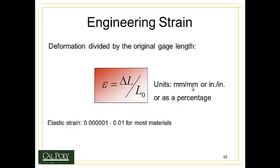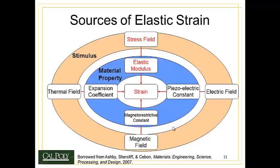For some reason that makes people nervous, so you'll often see the units displayed as millimeters per millimeter or inch per inch. Or, more commonly, you'll see it listed as a percentage. For example, if I had a sample that was 100 millimeters long originally and I deform it so that it stretches 10 millimeters, then 10 millimeters divided by 100 millimeters is 0.1, or 10%. That's a pretty big elastic strain. In most cases, the elastic strain ranges from very small numbers up to about 0.01 for most materials. The exceptions are materials like plastics and rubbers, which can stretch to very long distances.